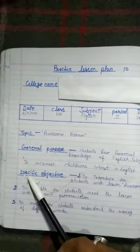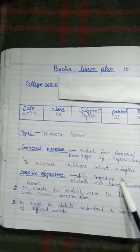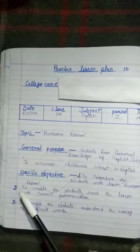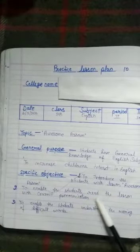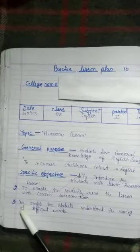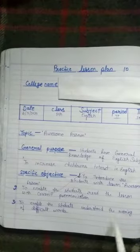Next headline will be right here, specific objective. First point, to introduce the students with lesson Awesome Assam. Second point, to enable the students to read the lesson with correct pronunciation. And third point, to enable the students to understand the meaning of difficult words.